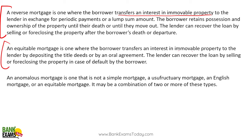In an equitable mortgage, the lender can recover the loan by selling or foreclosure of the property in case of default. An anomalous mortgage is a combination of all the previous types of mortgages we discussed.